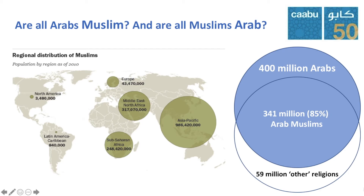Going back to the 30 different dialects spoken by 422 million people — a common misconception about the Arab world is that everyone is Muslim. In reality, the Arab world is made up of people of different faiths and people of no faith too. The majority is indeed Muslim; however, throughout history there has always been a very significant Christian population and a smaller but still significant Jewish population too.